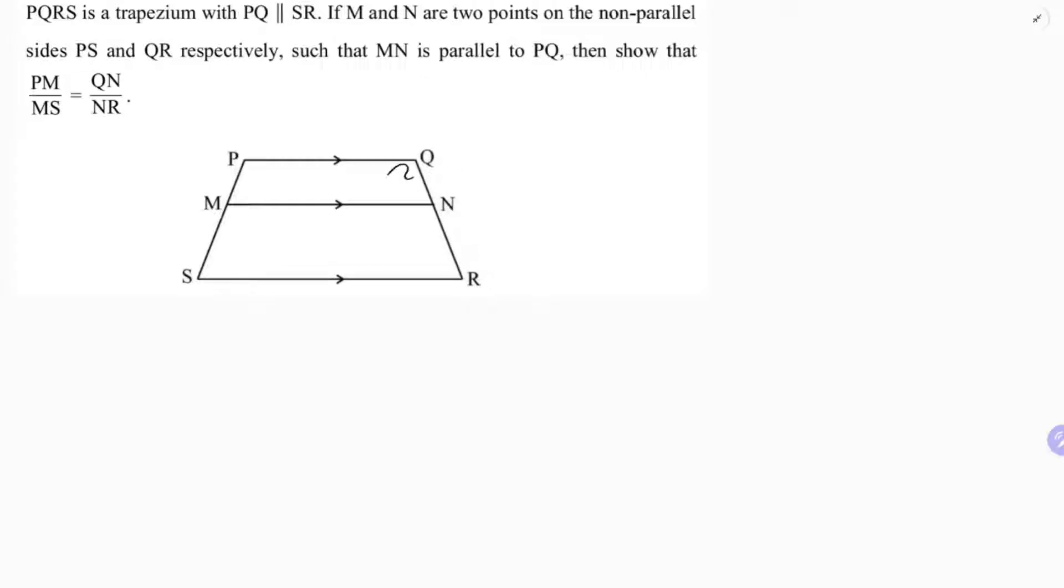This problem is simple based on BPT. First join PR such that it intersects MN at point T. Mark this point as T. This is the construction: joining PR such that it intersects MN at T. Now take two triangles and apply BPT.